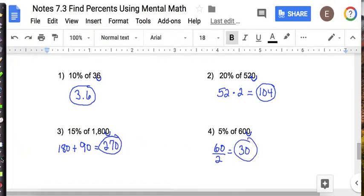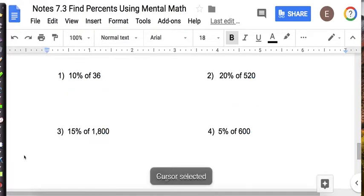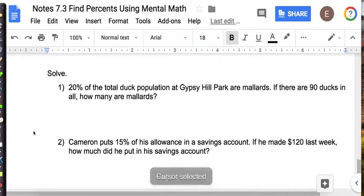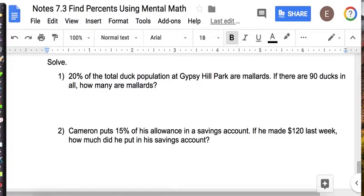Okay, let's look at the word problems together. So we need to solve these. 20% of the total duck population at Gypsy Hill are mallards. I'm going to underline 20%. If there are 90 ducks in all, how many are mallards?